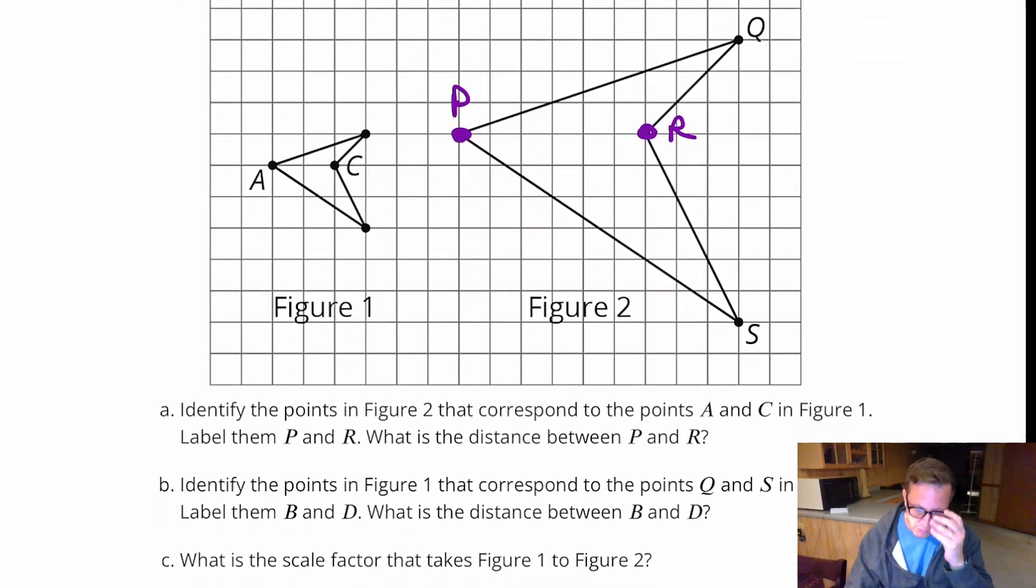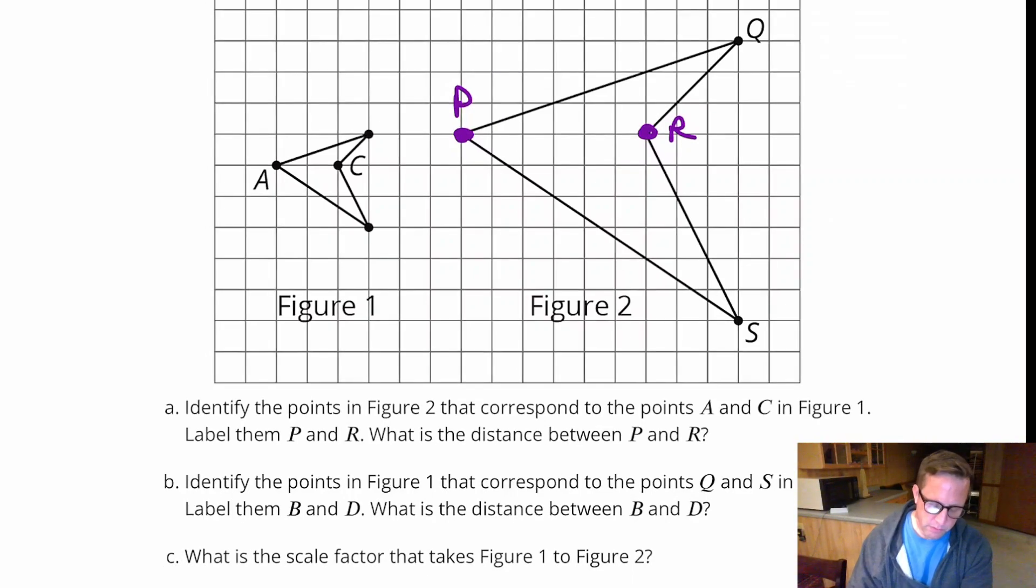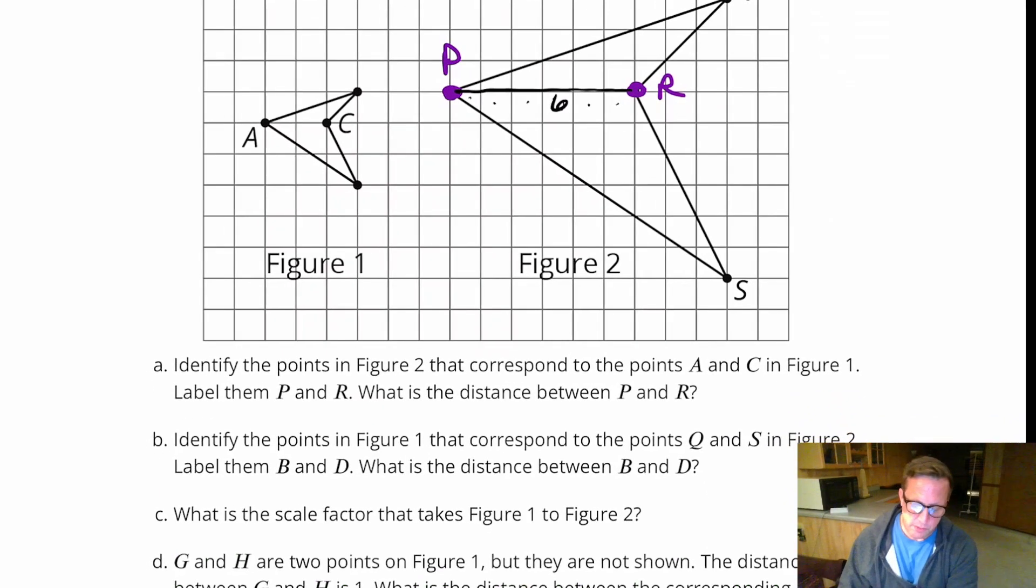Identify the points in figure one. Oh, wait. I didn't answer that question. What is the distance from P and R? All right. So, the distance from here to here is one, two, three, four, five, six. I'm counting the number of squares between points P and point R. So, that's six.